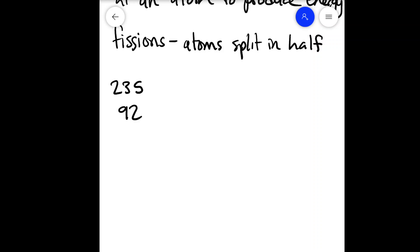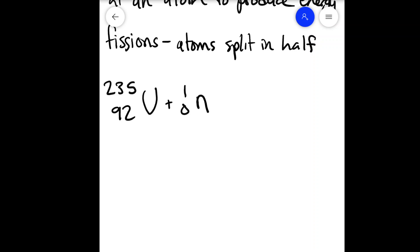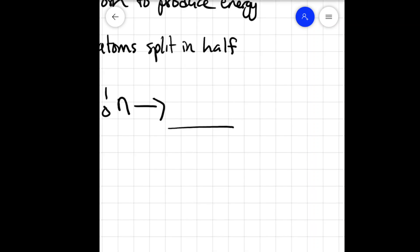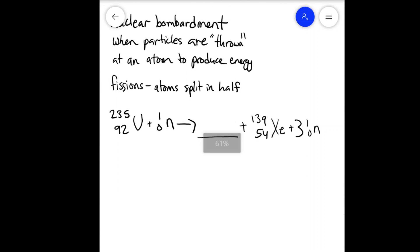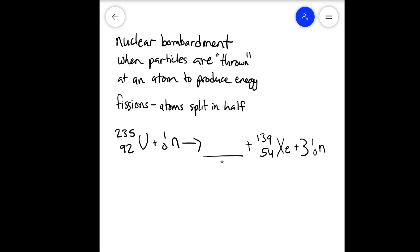235 uranium plus a neutron. And now we know it's bombardment because this neutron is on the reactant side. So we're putting this neutron with this uranium and then we are getting a blank and then we're not going to be able to see it all because my screen is so small.